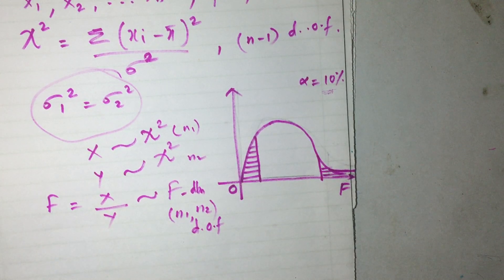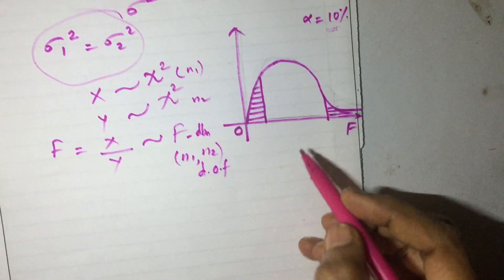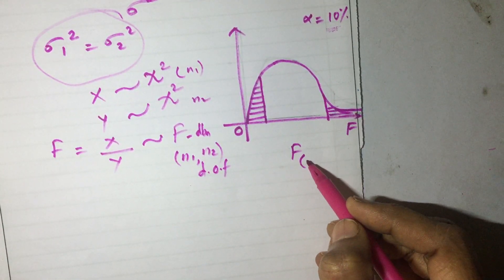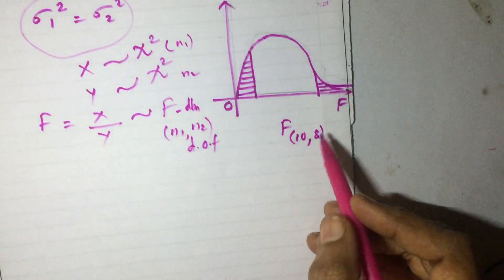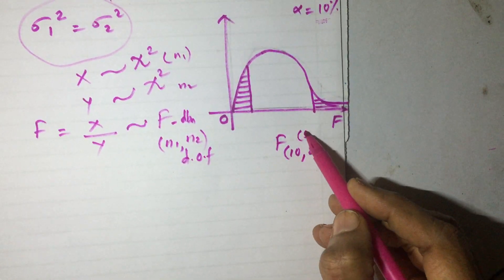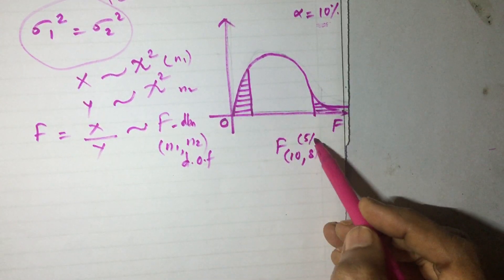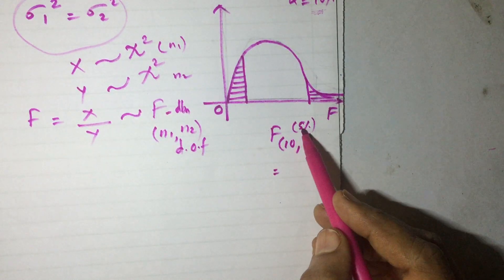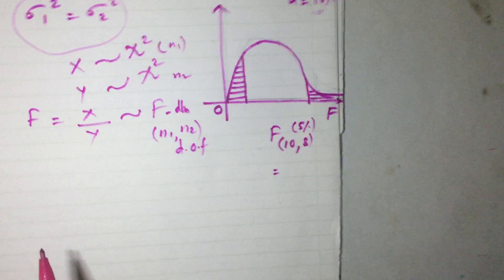Now I will explain how to read the F-table. Suppose I want to calculate F(10, 8) at 5%. The degrees of freedom are written as F(10, 8). Alpha is 10, so I am considering a two-tailed test, meaning I look up the table at 5%, which is 0.05. There is an F-table — it has already been shared with you. So at 0.05, we look up this table.